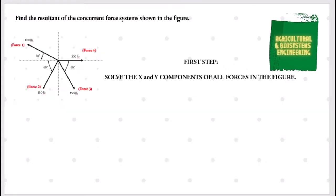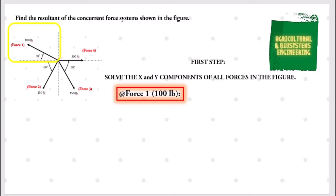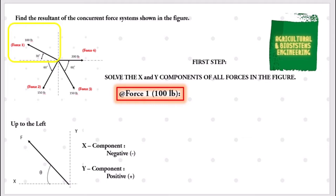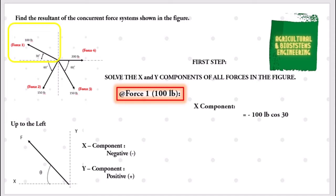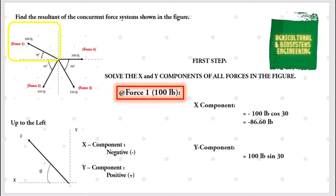Our first step is to solve for the x and y components of all forces. For Force 1, the 100 pounds, its direction is going up to the left, so its x component is negative and its y component is positive. The x component is negative 100 multiplied by cosine 30, giving negative 86.60 pounds. For the y component, we have positive 100 sine 30, giving 50 pounds.